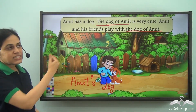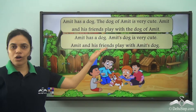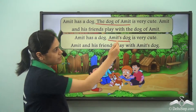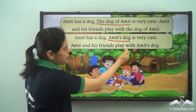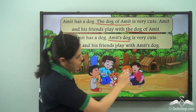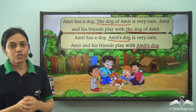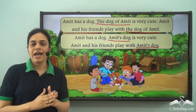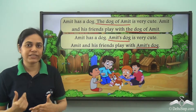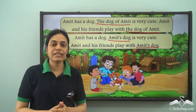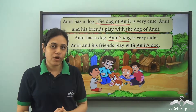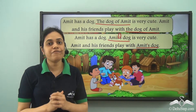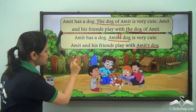So the paragraph can be written as: 'Amit has a dog. Amit's dog is very cute. Amit and his friends play with Amit's dog.' Using this hook, we have been able to make the sentence concise and short, and now it is easy to read and write. Amit's dog means that the dog is possessed by Amit, or the dog belongs to Amit. This hook-like thing is a very important punctuation mark called the apostrophe.